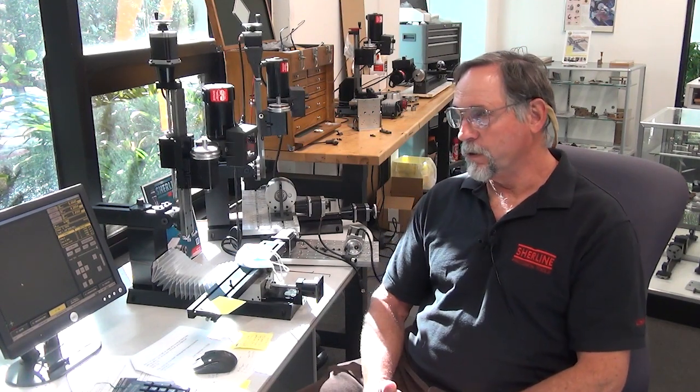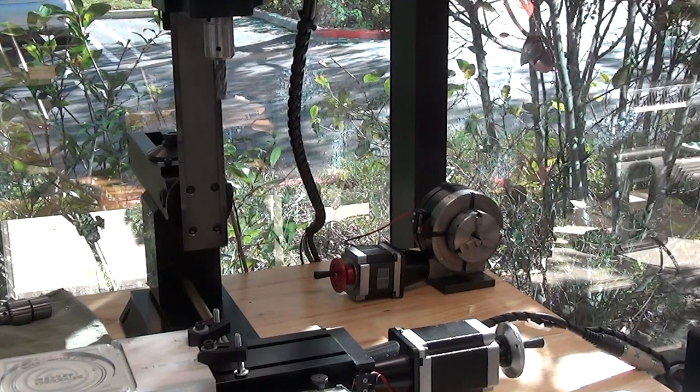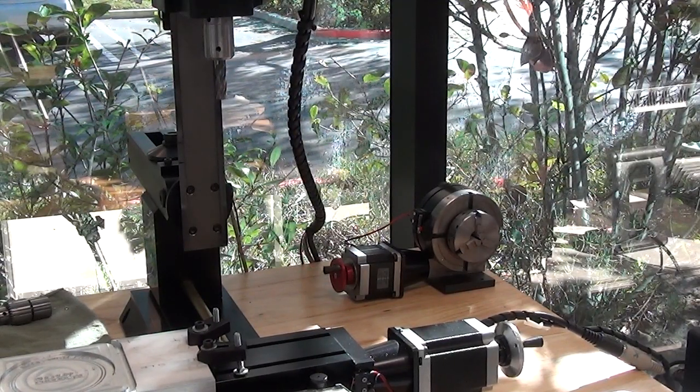So first we're going to go over using G90 and G91 for moves on the mill with the Maslow Control, and then we'll go over the same thing on the lathe, which is a little bit different. Our Maslow Control is on. First thing we're going to do is home it out. Now the position it just homed out to is the machine zero position.